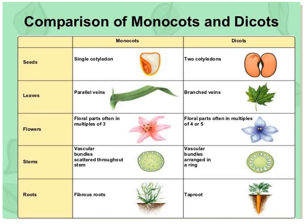I always advise students to go for leaves and flowers. Based on leaves alone you can distinguish monocot from dicot plants. If flowers are also available, then you have two different parameters by which you can distinguish monocot and dicot plants.